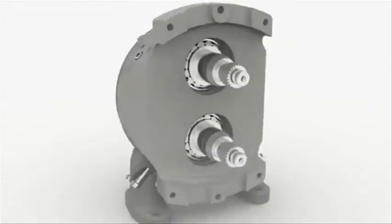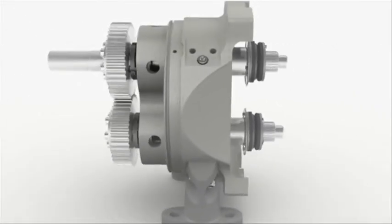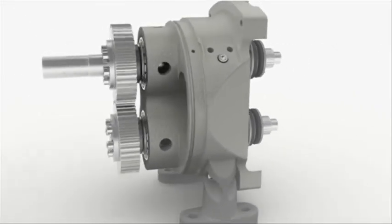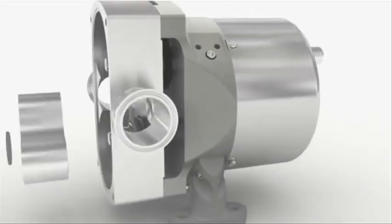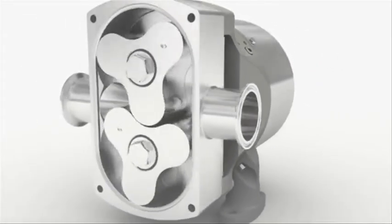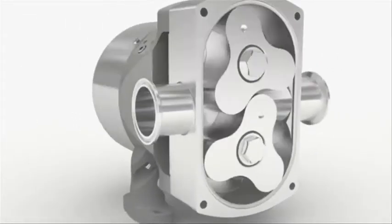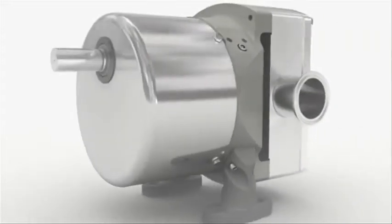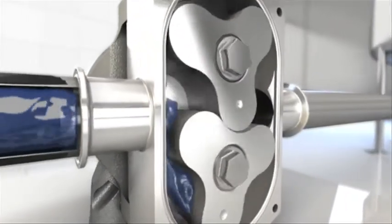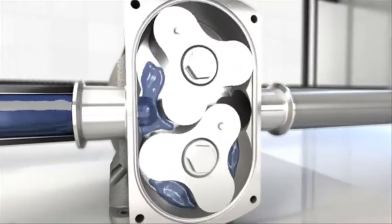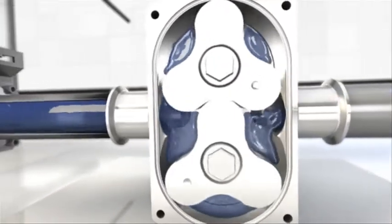Optilobe is a rotary lobe pump for general applications. Available in an optimized range, the Optilobe is designed with simplicity in mind. It is a cost-effective solution that still features uncompromising Alpha Laval quality.